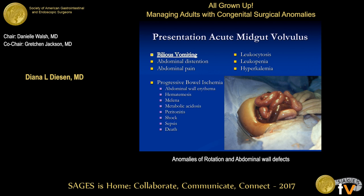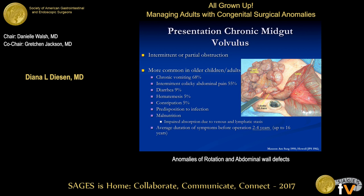With progressive bowel ischemia you see abdominal wall erythema, metabolic acidosis, sepsis, death. In the chronic condition, these patients are often symptomatic two to four years prior to their operation, with some reportedly symptomatic for eight to sixteen years prior. They're characterized by intermittent or partial obstruction, and these patients often report chronic crampy abdominal pain, nausea, vomiting, constipation, and malnutrition.